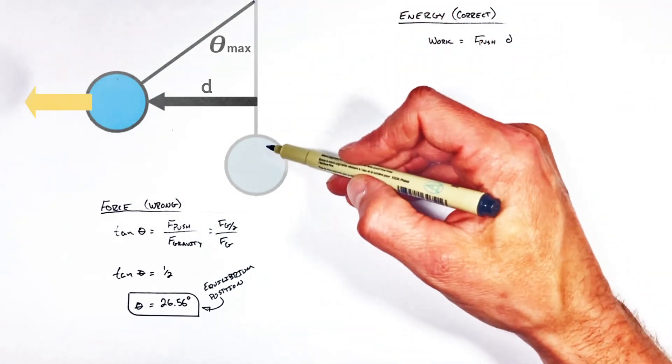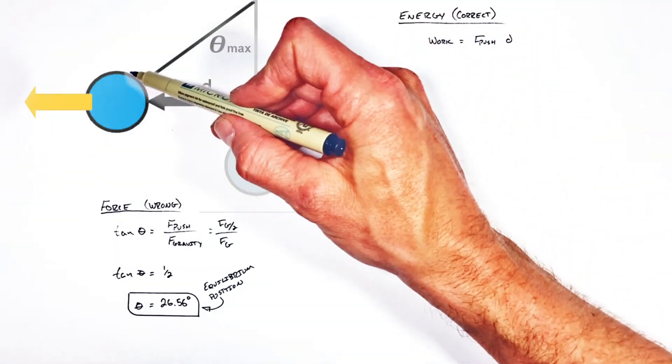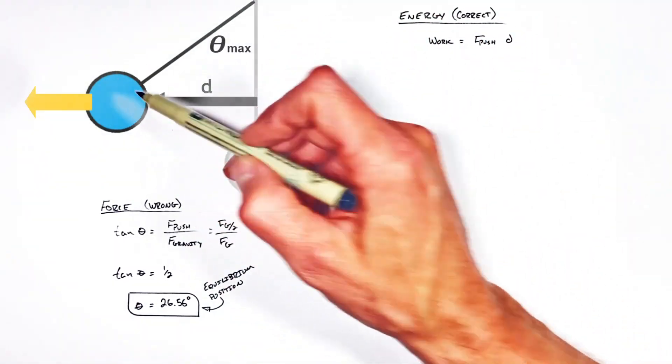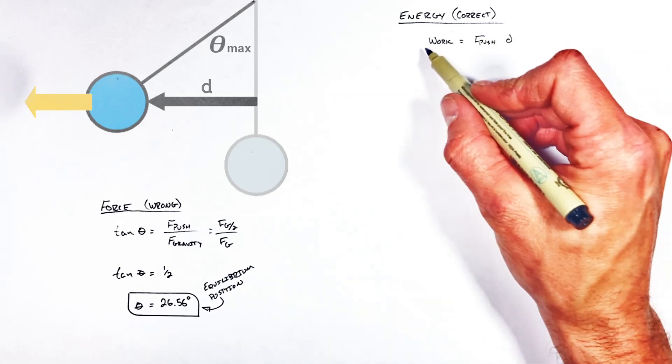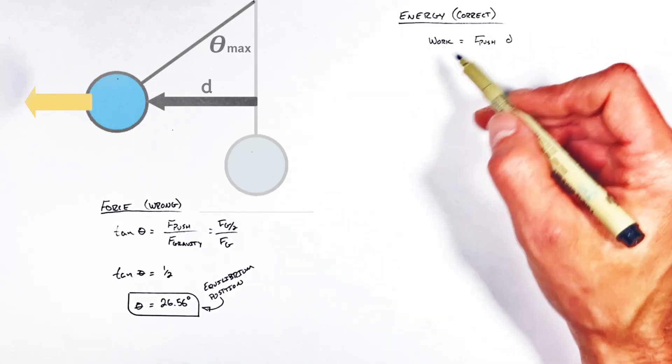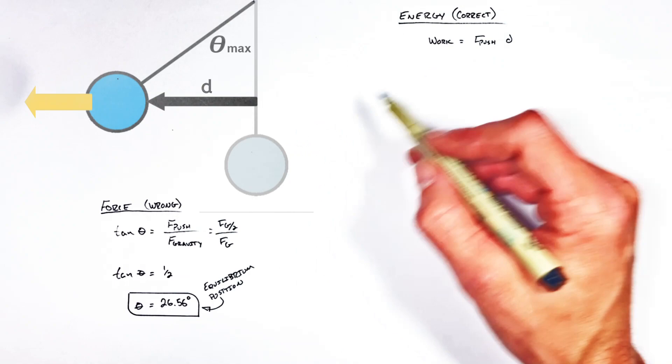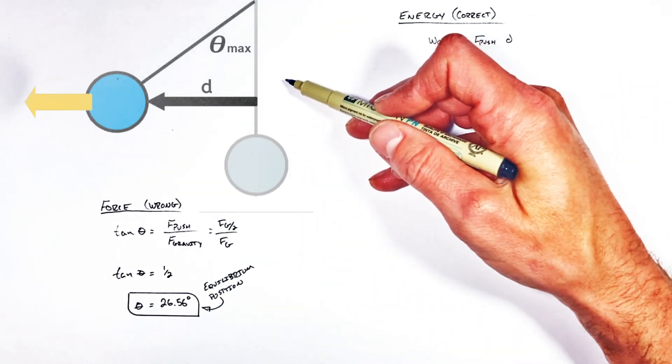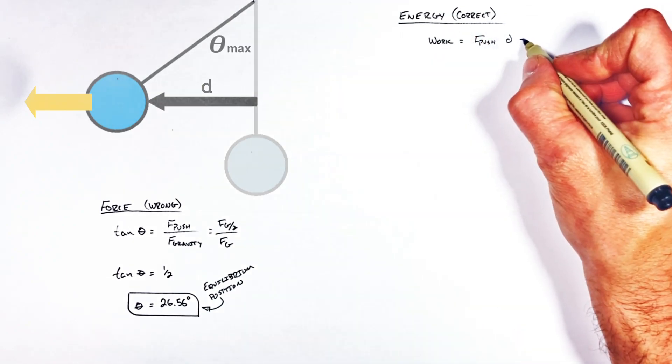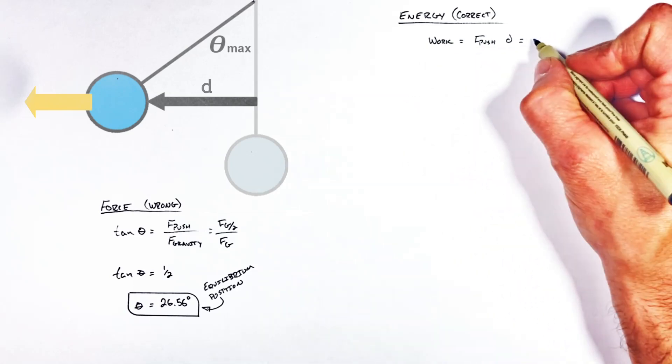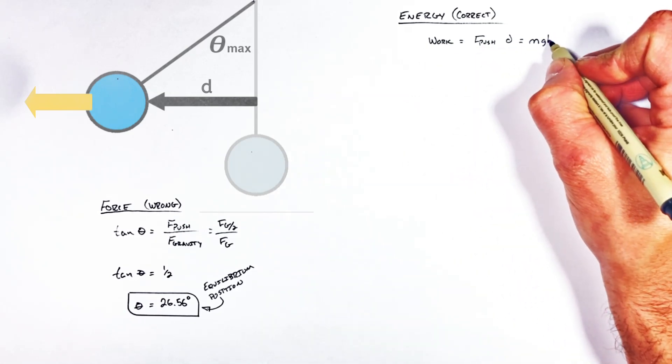Now realize, the pendulum starts at rest, and when it gets to its maximum displacement, it's going to finish at rest. Which means, ultimately, all of this work that we put into the pendulum is going to turn into gravitational potential energy. So I'm going to set this work equal to mgh, the potential energy of the pendulum.